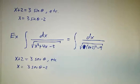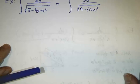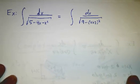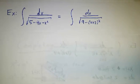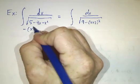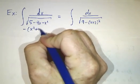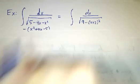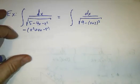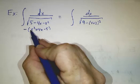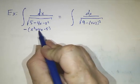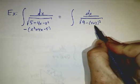Next example. If you have 5 minus 4x minus x squared, you should think of that as negative x squared plus 4x minus 5. And you say, oh, well that's x plus 2 squared.